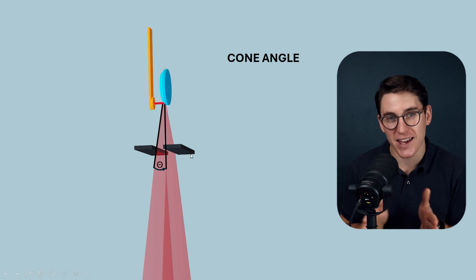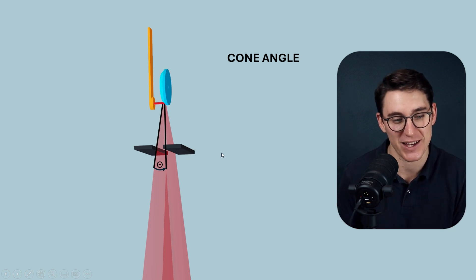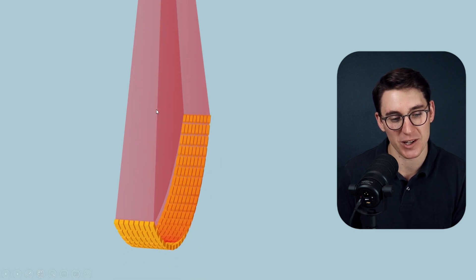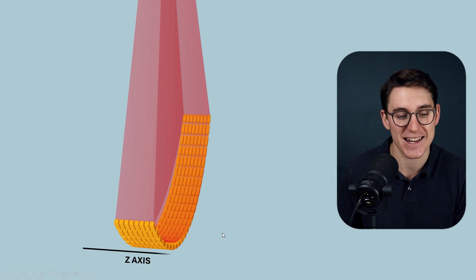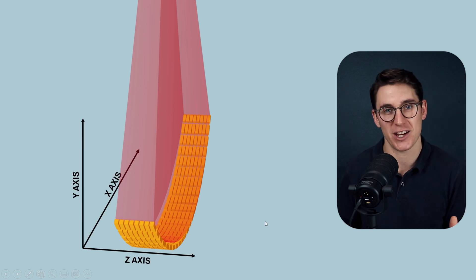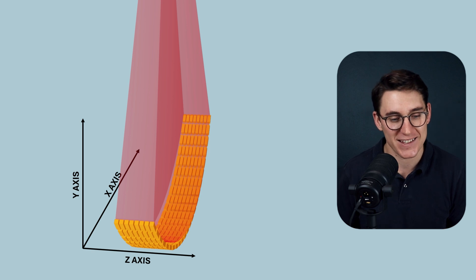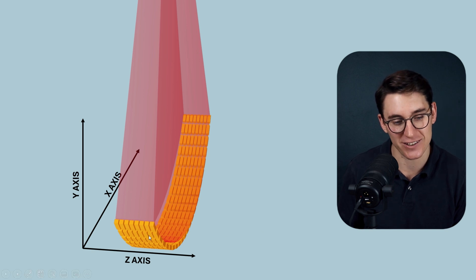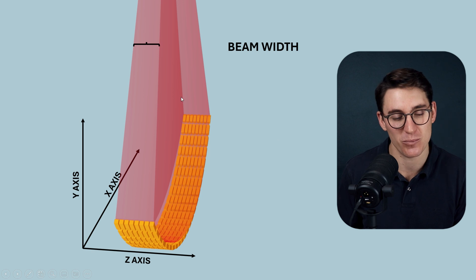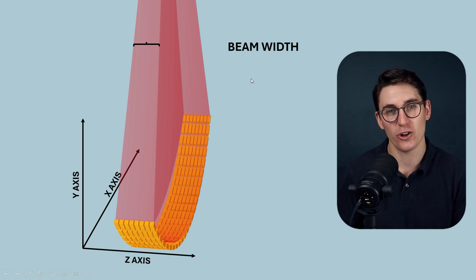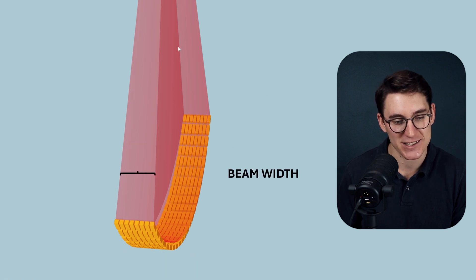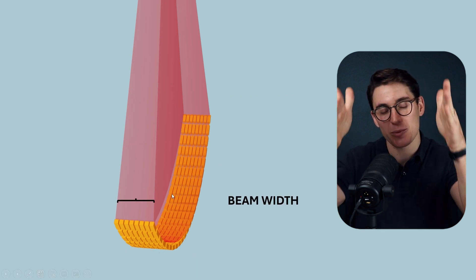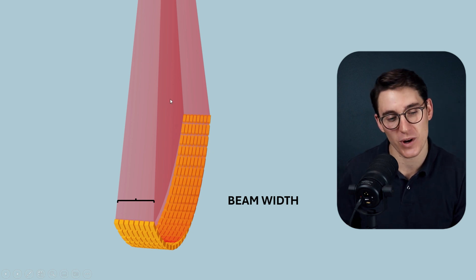So what we're dealing with is fan beam and cone beam geometry — the x-ray beam fanning out in both the x-y plane and the z-plane. This cone angle creates a beam heading out towards our detectors that has some width, covering data along the z-axis of our patient. The z-axis is the longitudinal plane as the patient moves through the CT scanner. Notice how the beam width gets wider as we extend out towards the detectors. The further away from the source in cone beam geometry, the wider the beam is going to be.